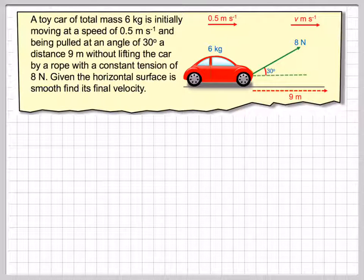We've got a rope here at 8 newtons and the angle here being pulled up is 30 degrees. Given that the horizontal surface is smooth, i.e. no friction, find the final velocity.